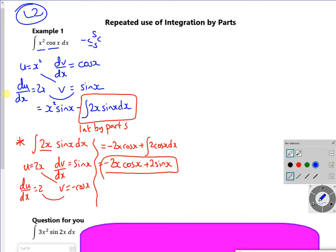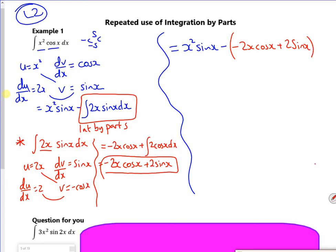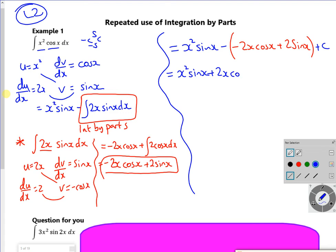So I'm going to change the colour back. So my big integral is going to be x squared sin x minus this red box, which is going to be minus 2x cos x plus the 2 sin x plus c on the end. So I've got an x squared sin x plus a 2x cos x plus c as an answer there.